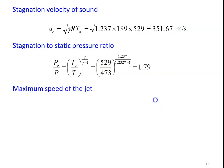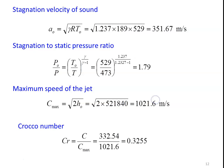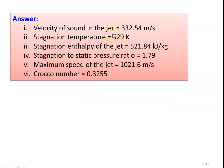Maximum speed: C_max = √(2H₀) = √(2 × 521,840) = 1021.6 m/s. Crocco number: CR = C/C_max = 332.54/1021.6 = 0.3255. Answers: velocity of sound = 332.54 m/s, stagnation temperature = 529 K, stagnation enthalpy = 521.84 kJ/kg, stagnation to static pressure ratio = 1.79, maximum speed = 1021.6 m/s, Crocco number = 0.3255.